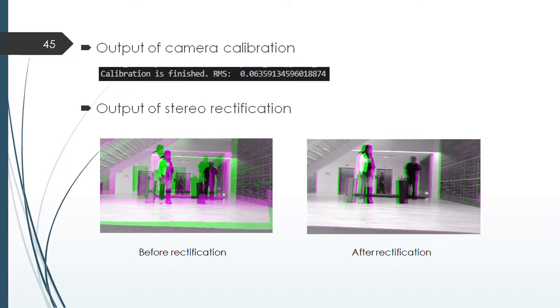Output of camera calibration. While we calibrate the cameras, the RMS camera calibration error should be below 1 pixel. And as you can see, we have got an RMS error of 0.06, that indicates that our camera calibration is correct.